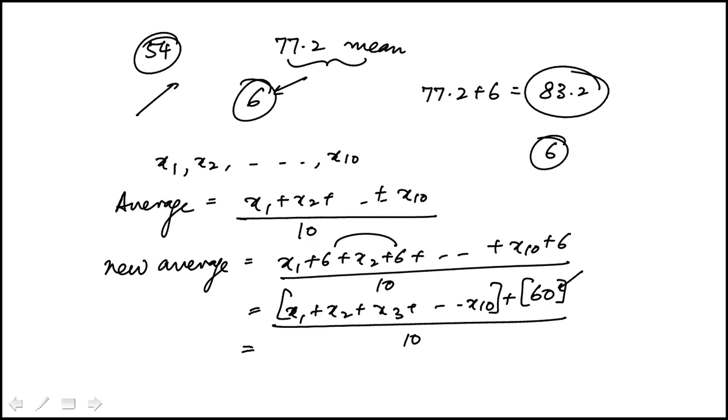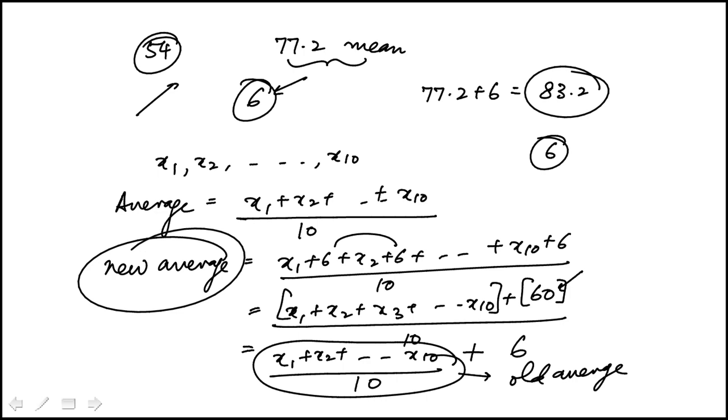So we're going to get x1 plus x10 over 10 plus 6. This guy is the old average. So you'll see how the new average is old average plus the number I had added to each one of the original data points.